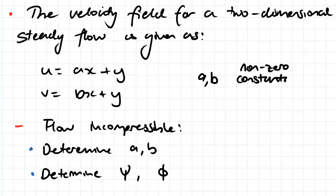So here's our question here. The velocity field for a two-dimensional steady flow is given by u equals ax plus y, v equals bx plus y, and a and b are non-zero constants.